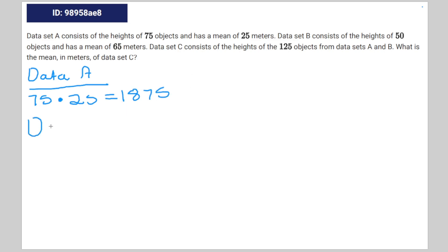I'll repeat the same process for dataset B. So here, that's going to be 50 times average of 65. That's going to be 3250.